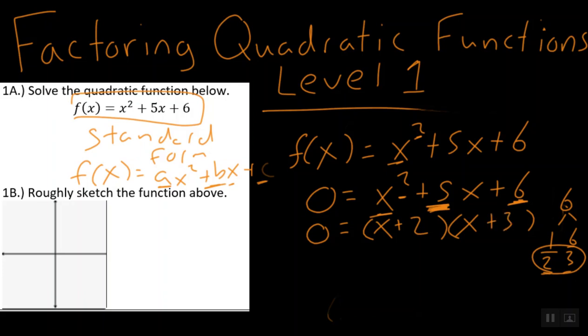Now, this is factoring. But in order to find out where these values of x make this equation equal to zero, what I have to do is I have to take each factor, x plus 2, for instance, and I have to set it equal to zero. Why? Because zero times anything will give me zero. And conversely, I also want to set x plus 3 equal to zero because zero times anything will also give me zero.